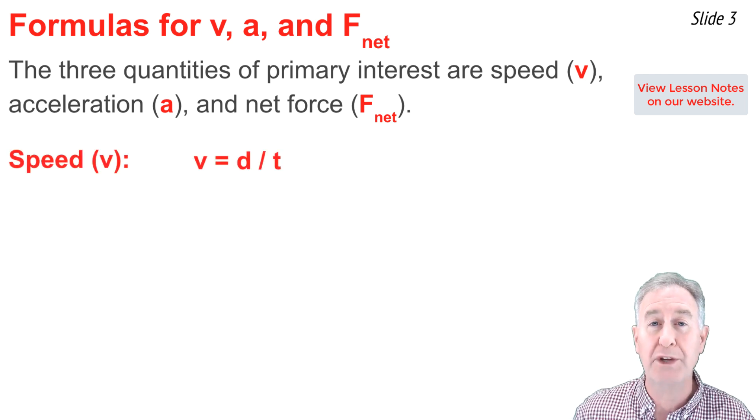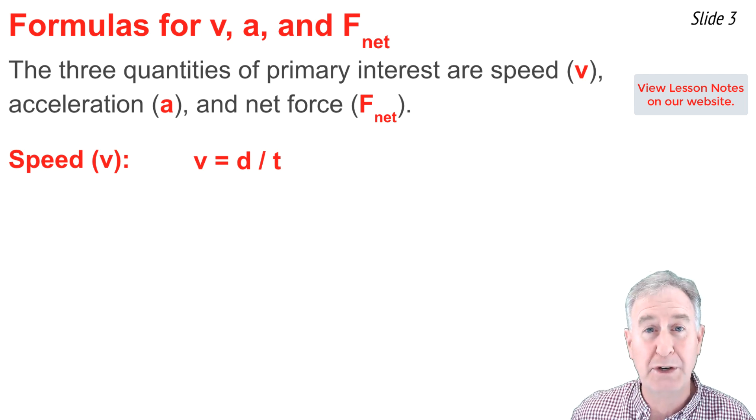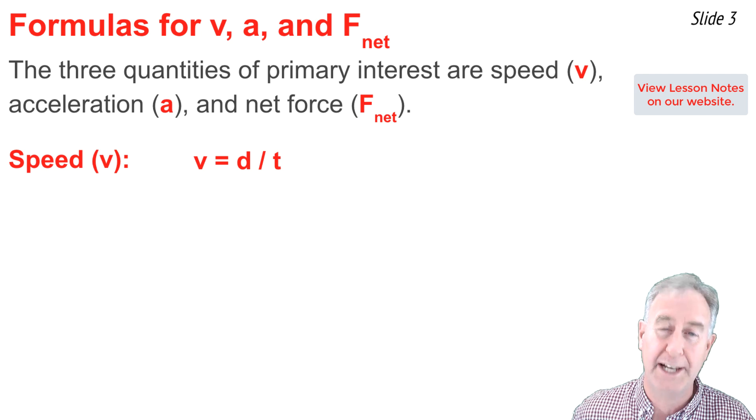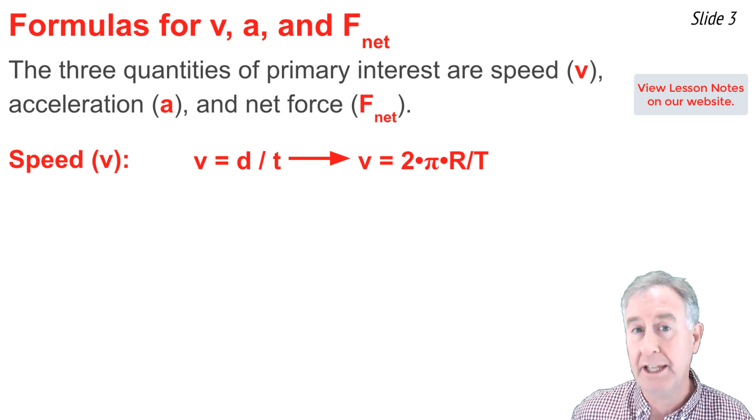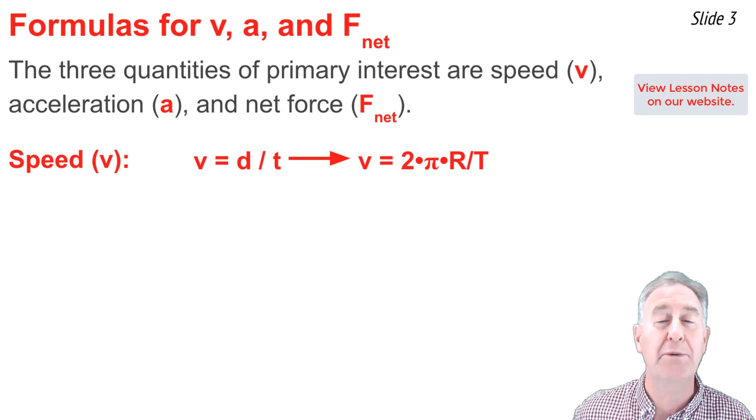When it comes to speed, you need to calculate a distance per time ratio. For moving in circles, the distance for one time around is known as the circumference. It's 2πr. And the time for going around once is known as the period. So the speed formula for circular motion is speed equal 2 times π times r divided by big T, which is the period.